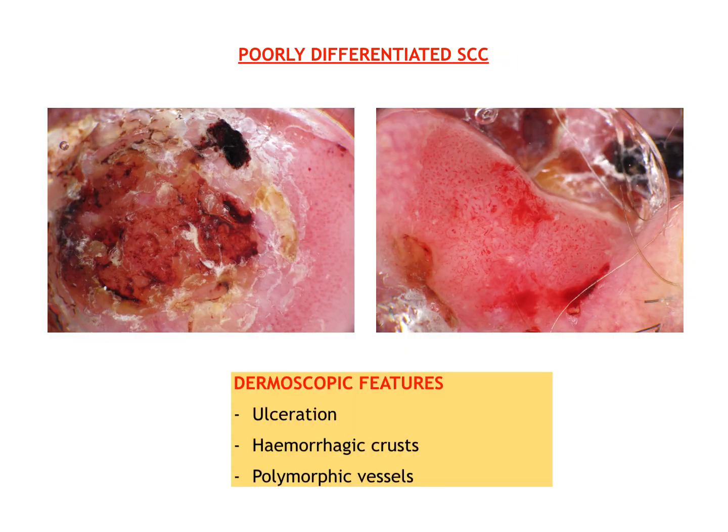Conversely, red color due to ulcerations, hemorrhagic crusts and polymorphic vessels is predominant in poorly differentiated SCC.